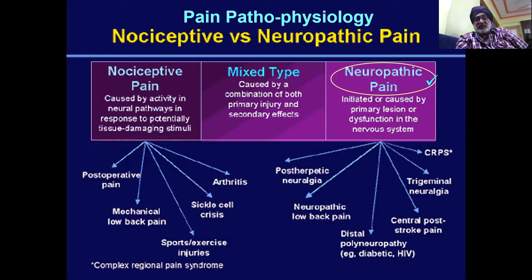The main causes for neuropathic pain include post-herpetic neuralgia, diabetic polyneuropathy, central post-stroke pain, and CRPS among others. Whenever nociceptive and neuropathic pain are combined, it leads to a mixed type of pain.